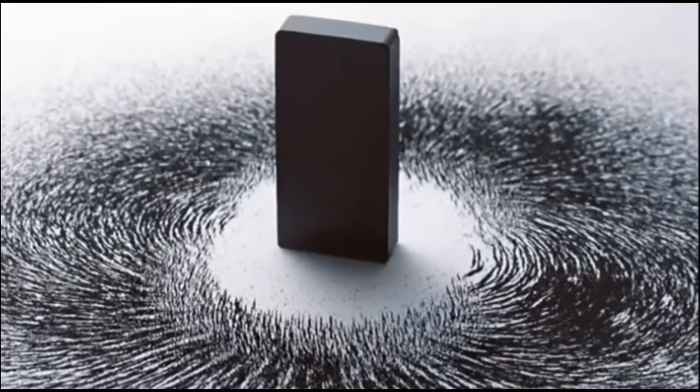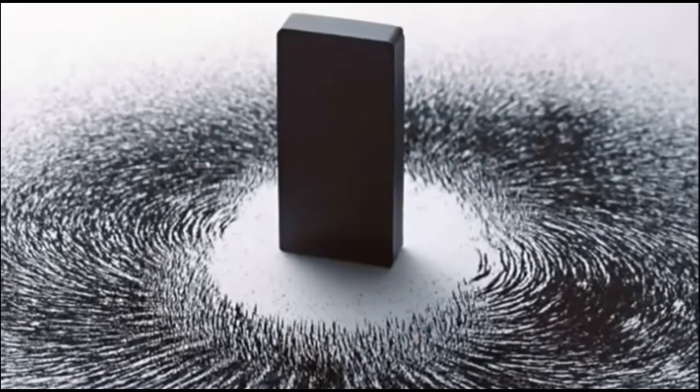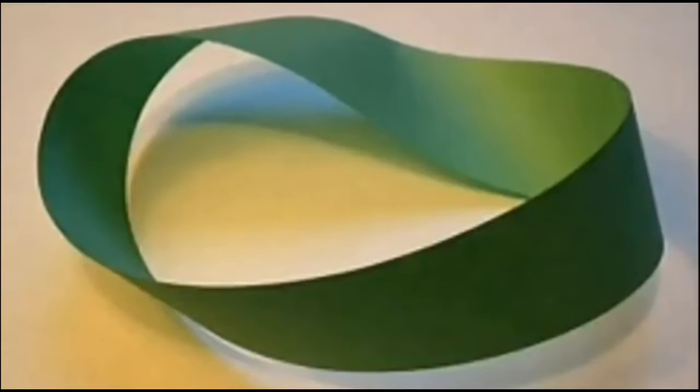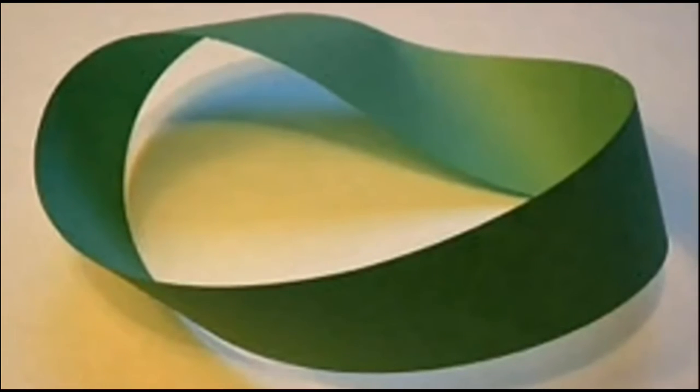So when you get to the edge of the earth, you see the monolith. And if you jump over the monolith, you end up in the Möbius strip. You end up right back where you started from. It's just that simple. You're in the holodeck.